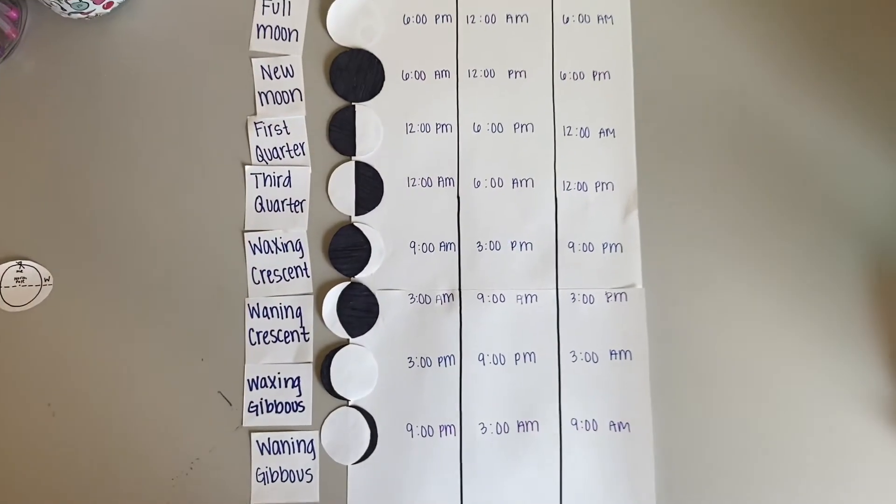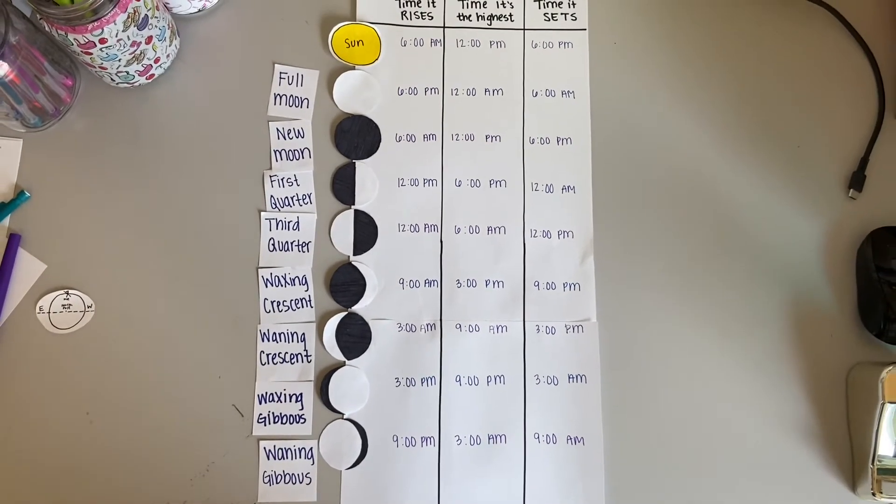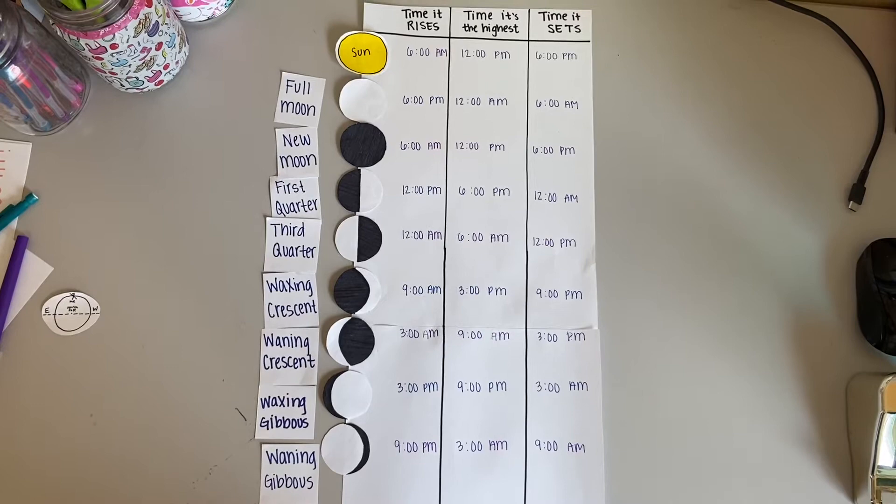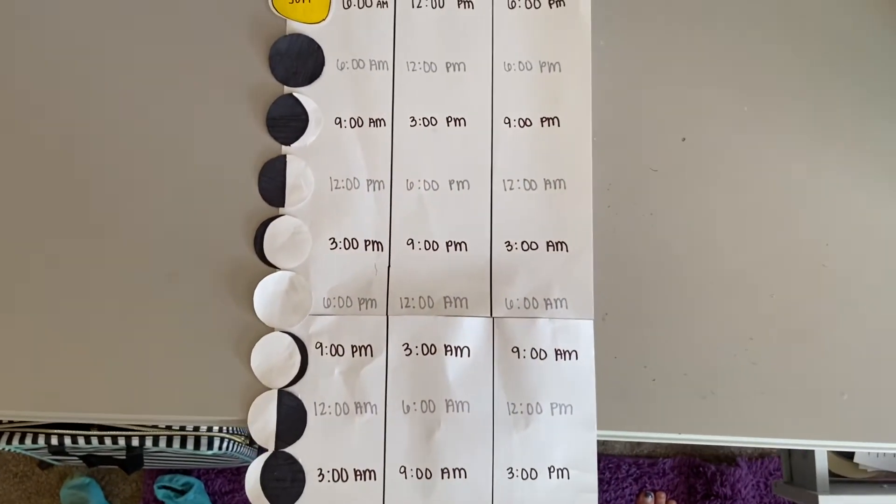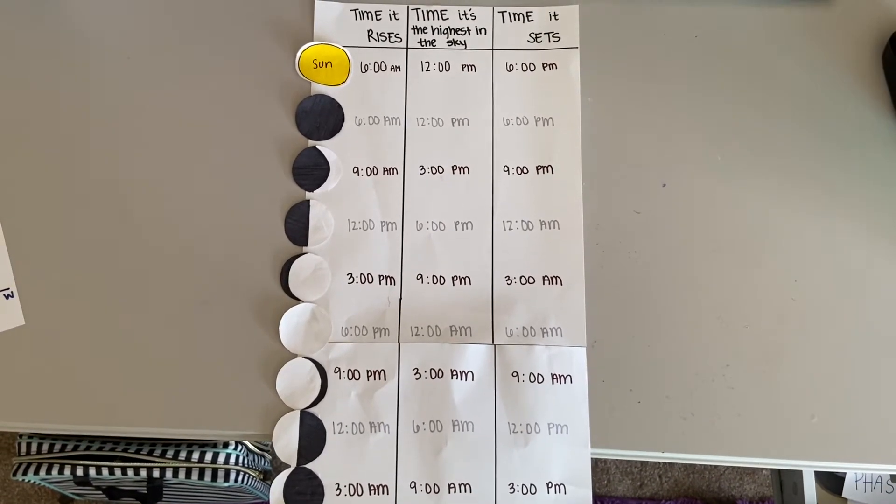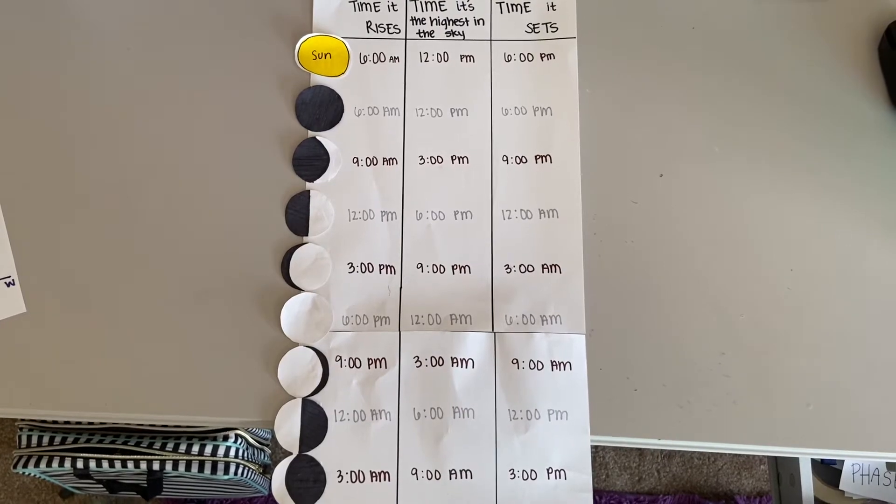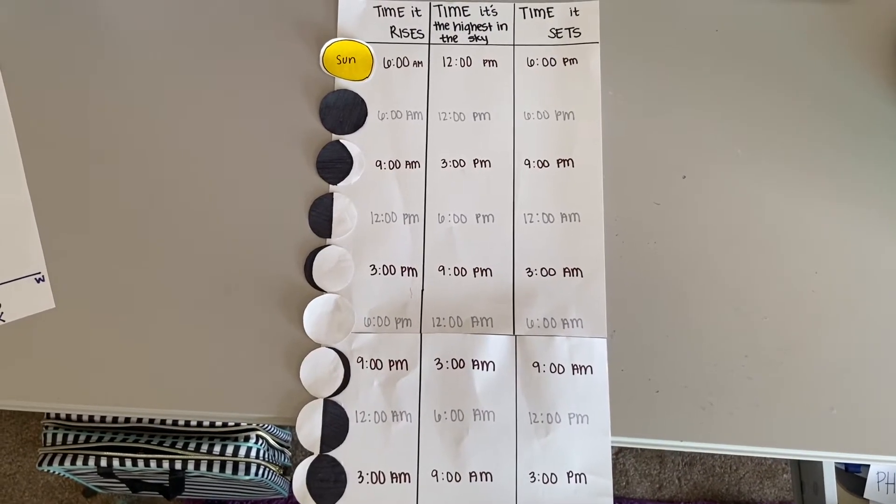In my other video, we learned and figured out when the moon rises and sets based on its moon phase, and now we're going to put them in order. It looks much better. We start with the new moon at the top at the same time as the sun, and then work our way down until we get through all the phases that go around the earth.